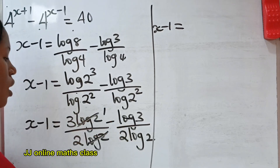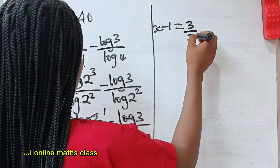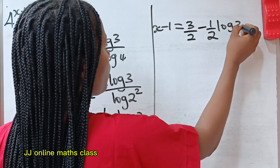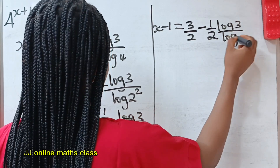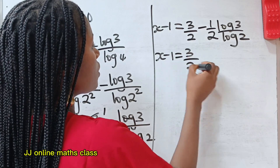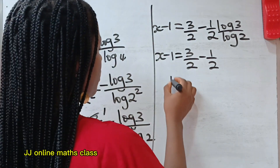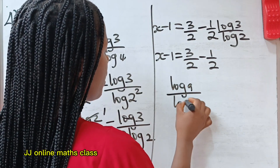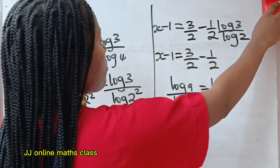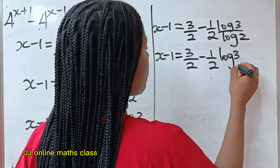Log 2 will divide itself to give us 1, so all we have left is 3 over 2. So we write 3 divided by 2 minus, then this is the same thing as one half multiplied by log 3 divided by log 2. Now, when you have log a divided by log b, this is equal to log a base b. So we can write this as log 3 base 2.